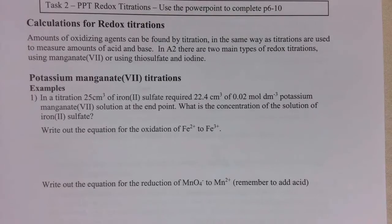So you're going to need your notes and a calculator, and we're on page 6. So the calculations for redox titrations, there are two main types of redox titrations you need to be aware of, and that is reactions using manganate, and the reactions using thiosulfate and iodine. So we're going to start with the potassium manganate titration.